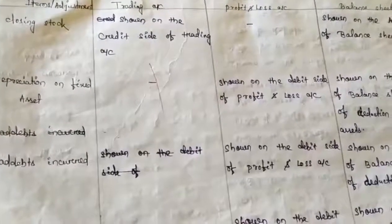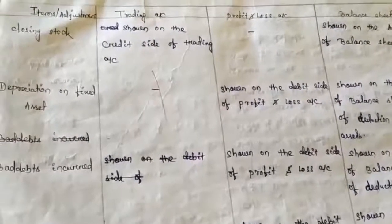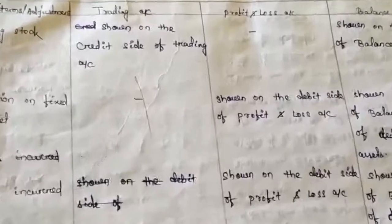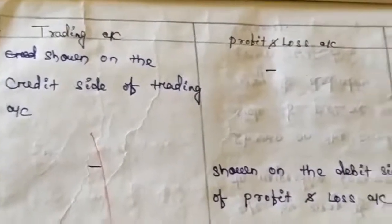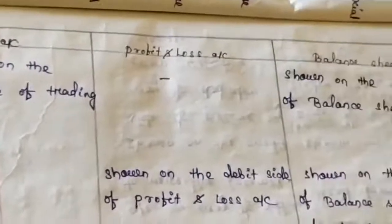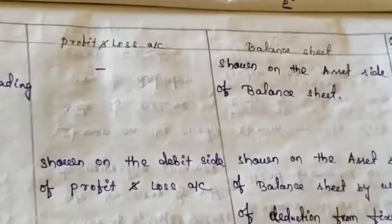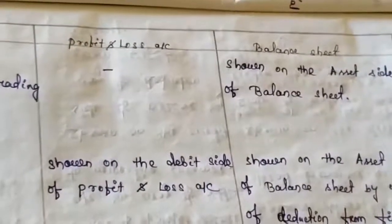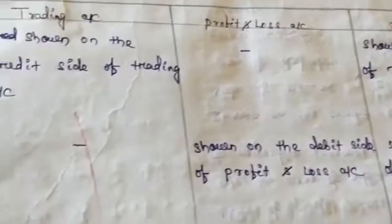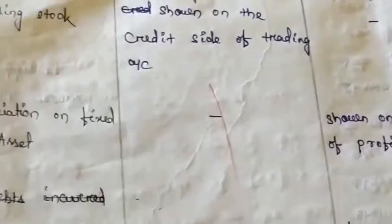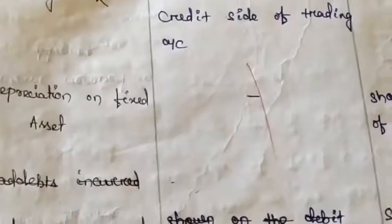You know about the treatment of closing stock. The first treatment is it is shown on the credit side of the trading account, and the second is shown on the asset side of the balance sheet under the head current assets. Moving on to our next adjustment, that is depreciation on fixed assets.